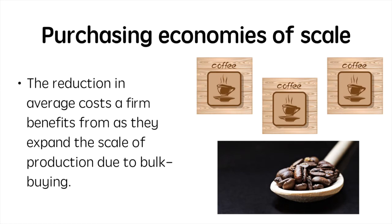As businesses grow, they need to order larger quantities of production inputs. For example, they will order more raw materials and may be able to obtain discounts and lower prices. A great example of this would be the cost reduction a coffee seller benefits from when they expand their business and require more coffee beans from their suppliers. Due to the increasing size of orders, coffee bean suppliers may reduce their sale price. Thus the firm achieves purchasing economies of scale.